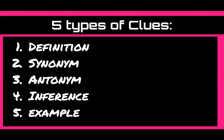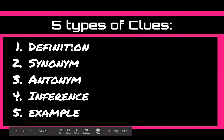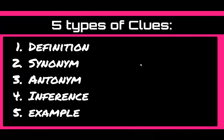There are five different kinds of clues we can use when we're looking at a new word. We can look for a definition in sentences around the word, we can look for synonyms, antonyms, we can use inferences and connections with what we already know, or we can look for an example in the text.